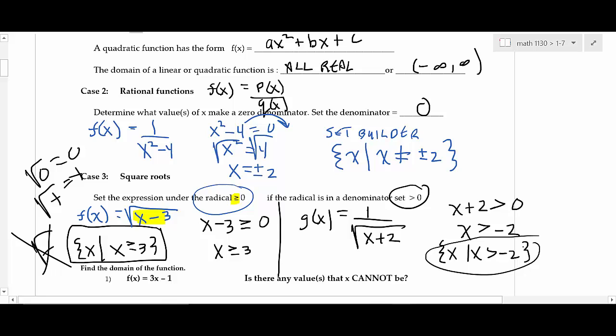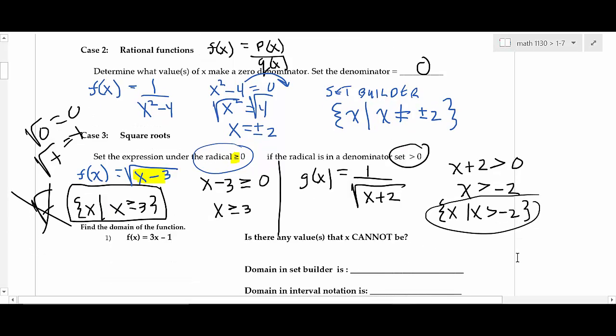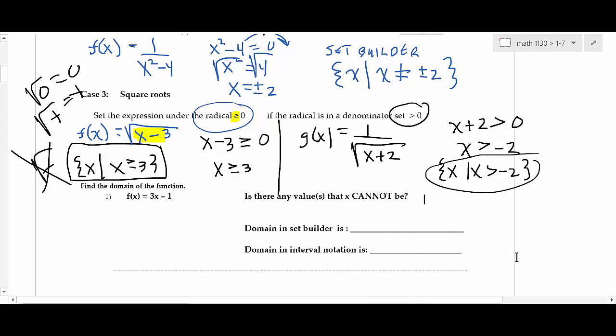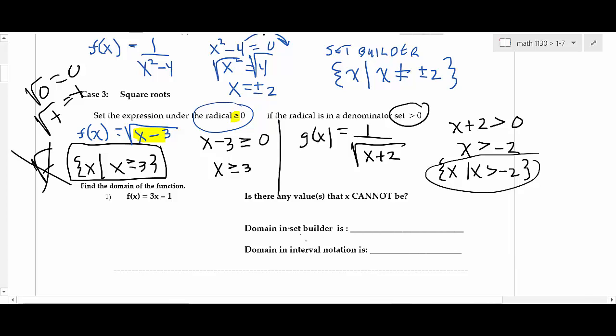Now let's work through specific examples. First: a linear function. It's y = mx + b — a line. Is there anything that x cannot be? No — you can multiply any number by 3. So the domain is all real numbers. Anytime you have a linear function, this answer is automatic; you don't even have to think about it.